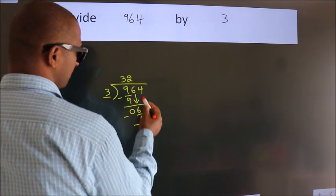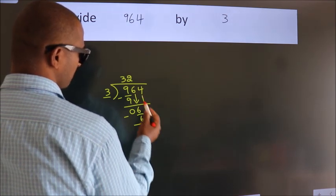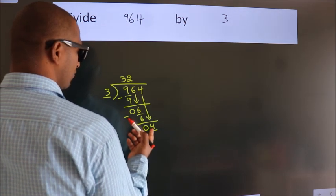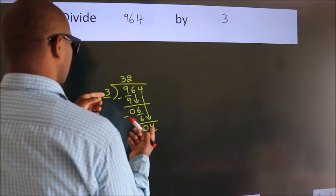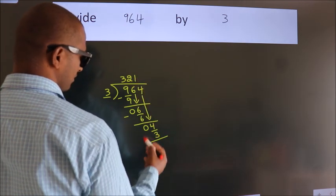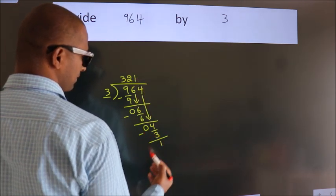After this, bring down the beside number. So, 4 down. A number close to 4. In 3 table is 3 1's, 3. Now, we subtract. We get 1.